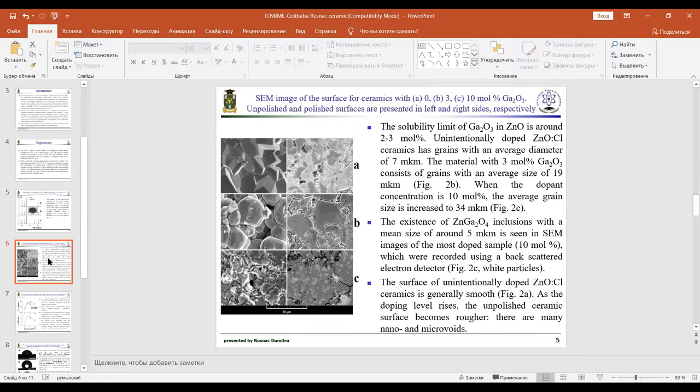The material with three mole percent gallium oxide consists of grains with average size of 19 micrometers. When the concentration is 10 mole percent, the average grain size is increased to 44 micrometers.